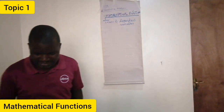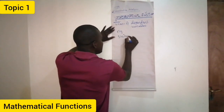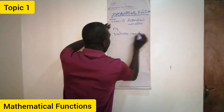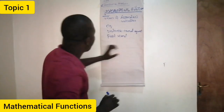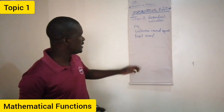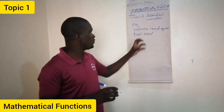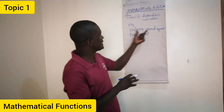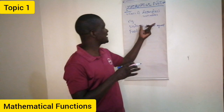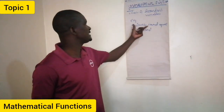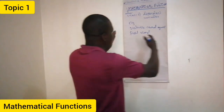For example, consider distance covered against fuel used. These are two variables — one is dependent and the other is independent. The distance covered will always determine the fuel which is used. So in this case, distance covered is the independent variable — it is on its own — while fuel used is the dependent variable. The longer the distance you cover, the higher the amount of fuel you are going to use.